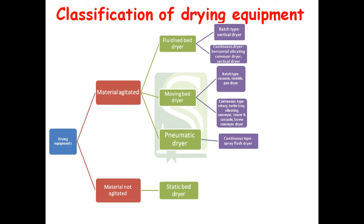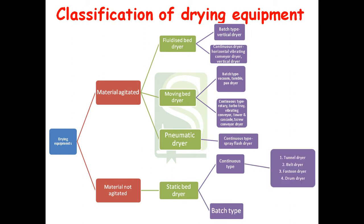The pneumatic dryer contains continuous type, with examples such as spray flash dryer. Static bed dryer is of two types: continuous type and batch type. In continuous type there is tunnel dryer, belt dryer, fast room dryer, and drum dryer. In batch type there is tray and truck dryer, vacuum shelf dryer, and freeze dryer.